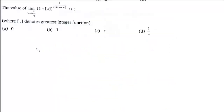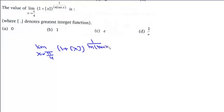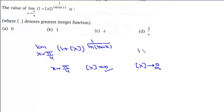Find: limit x→π/4 of (1 + GIF(x))^(1/log(10x)). As x→π/4, GIF(x) = 0 (since π/4 < 1). The GIF function takes exact integer values, not limiting values. So the expression is not of the 1^∞ indeterminate form; it is simply 1^(finite) = 1. The answer is option D.